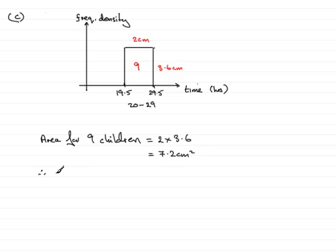Therefore, the area for one child has got to be this value divided by nine. So, that would be 7.2 divided by nine. Working that out, you get 0.8 centimeters squared.